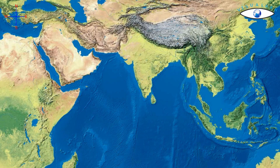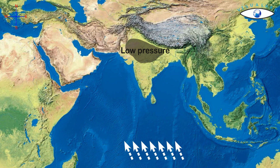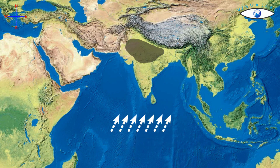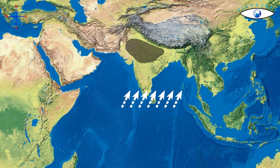By early June, the low-pressure conditions over the northern plains intensify, attracting the trade winds of the southern hemisphere. These southeast trade winds originate over the warm subtropical areas of the southern oceans. They cross the equator and blow in a southwesterly direction, entering the Indian Peninsula as the southwest monsoon.